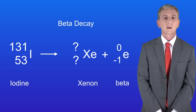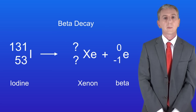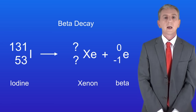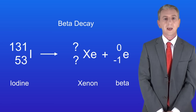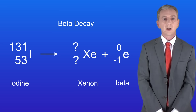Here's one for you to try. This shows iodine turning into xenon by releasing a beta particle. I'd like you to work out the atomic number and the mass number of the xenon atom. Pause the video now and try this yourself.